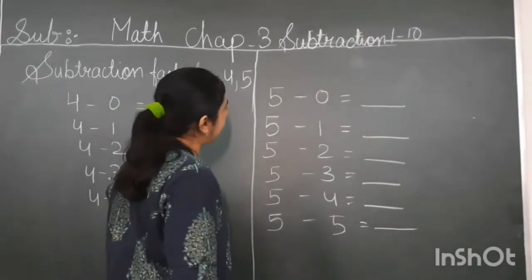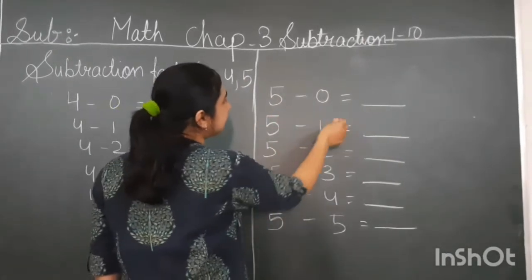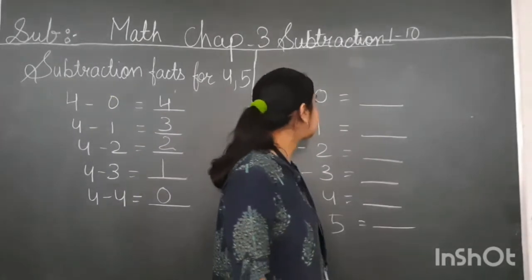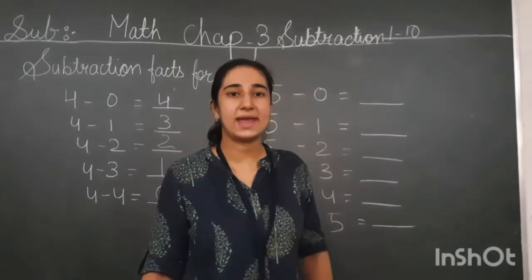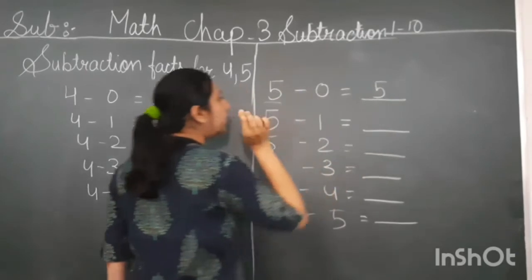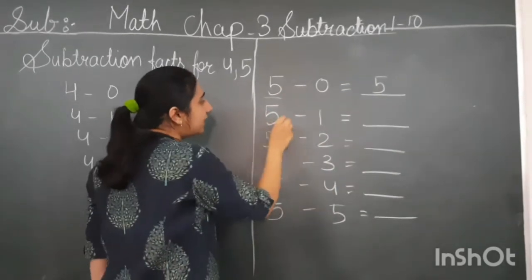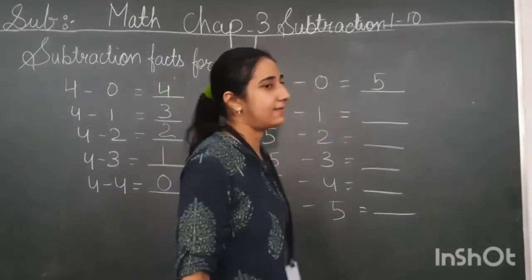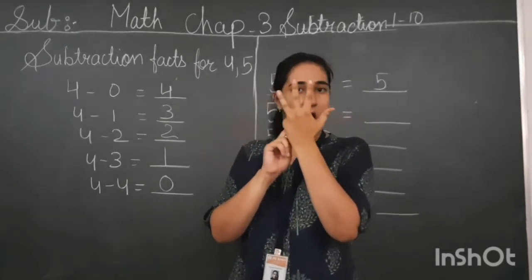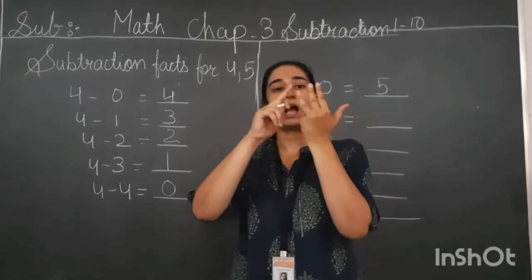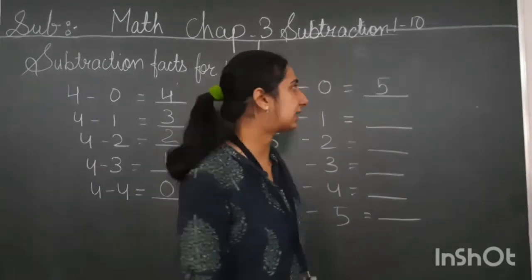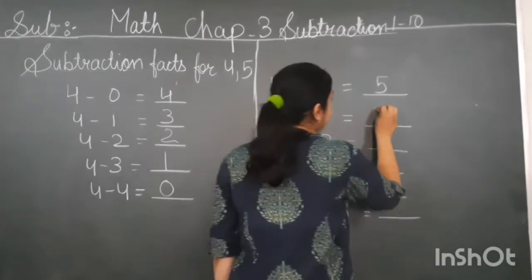Now, subtraction facts for five. Five minus zero — when we subtract zero from five, we get the number itself as our answer, that will be five. Five minus one: you are having five chocolates and you give one away. How many are left? Let's count — one, two, three, and four. So four chocolates are left with you. Four will be the answer.